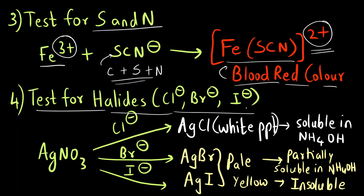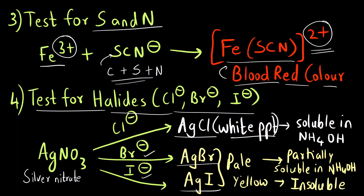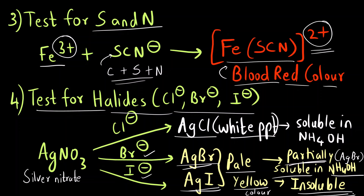Finally, the test for halides — chloride, bromide, and iodide — uses silver nitrate. If chloride is present, a white silver chloride precipitate forms, which is soluble in ammonium hydroxide (NH4OH). For bromide and iodide, a pale yellow precipitate forms. Silver bromide is partially soluble in ammonium hydroxide, while silver iodide is completely insoluble, which is how you differentiate between the two.